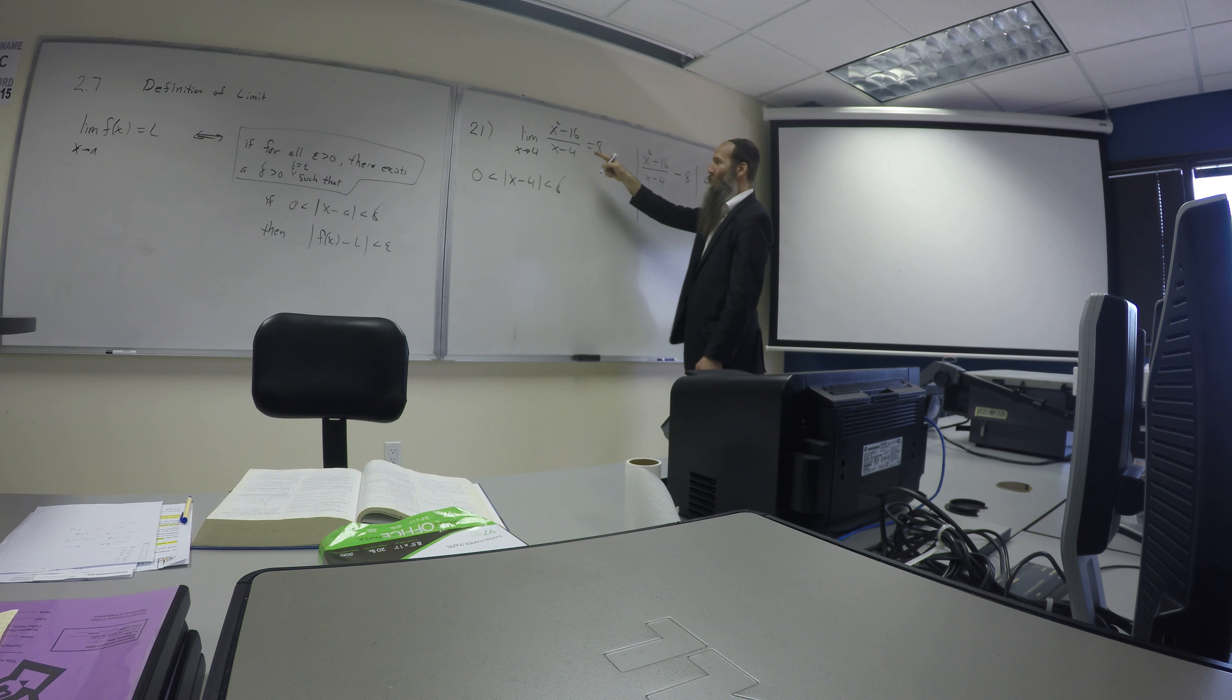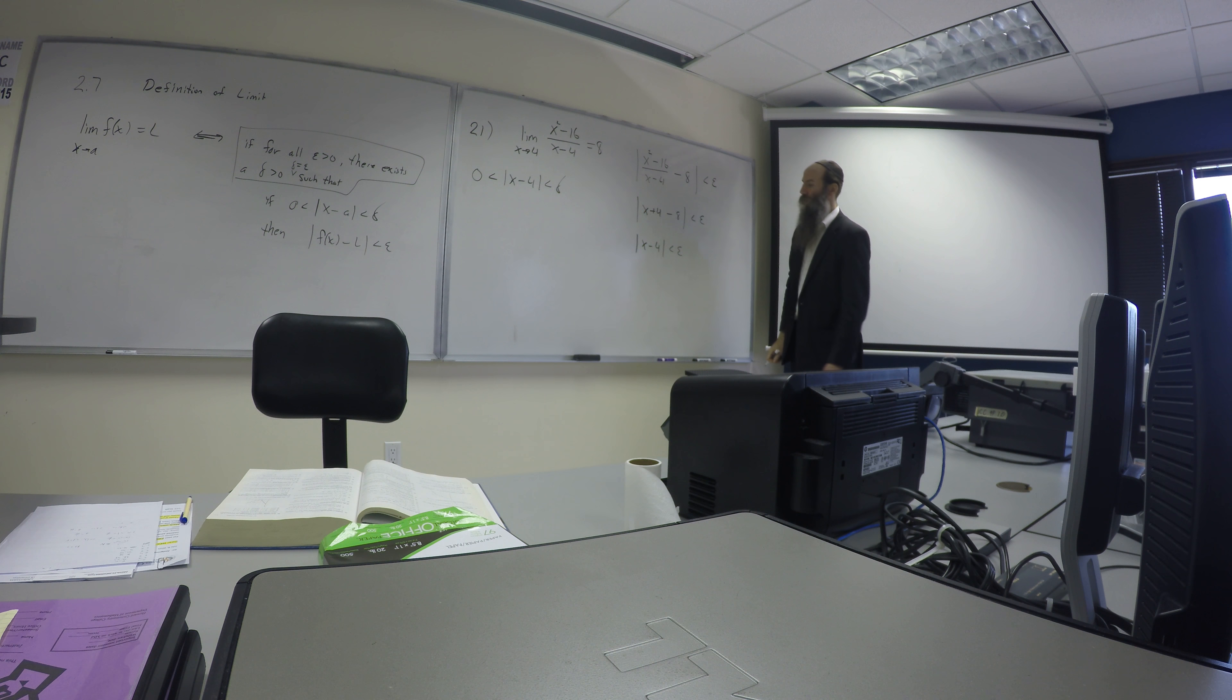Cancel the x minus 4 like we would have over here with the factor cancel business. So we would have x plus 4 minus 8 less than epsilon. Oh, this one's too easy. Look at this, too easy. And Carrie will be able to tell us why this one turned out so easy. So it looks like we should pick delta to be epsilon itself again, right? Just like the first problem.